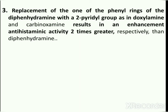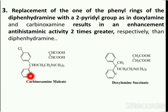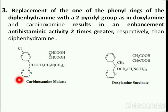Replacement of one of the phenyl rings of diphenhydramine with a 2-pyridyl group, as in doxylamine and carbinoxamine, results in an enhancement of antihistaminic activity two times greater than diphenhydramine. The structures of carbinoxamine maleate and doxylamine succinate are shown here. In these structures, the phenyl group is substituted with a 2-pyridyl group — this one in carbinoxamine and this one in doxylamine succinate. This replacement results in an enhancement of antihistaminic activity.